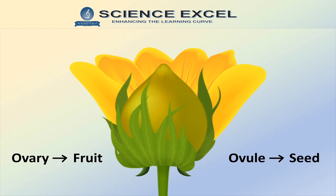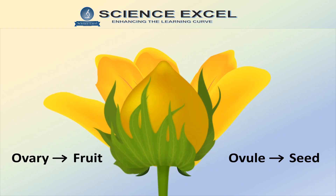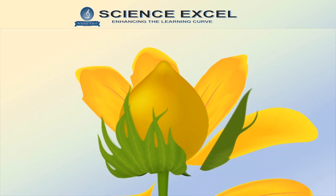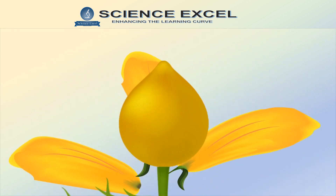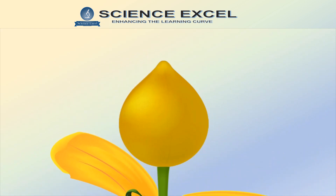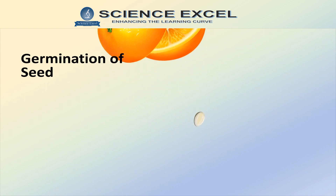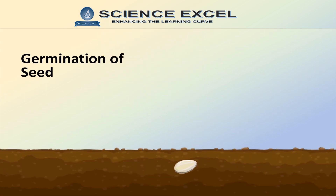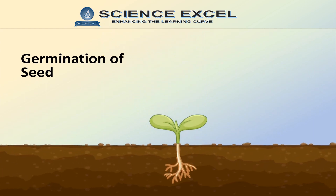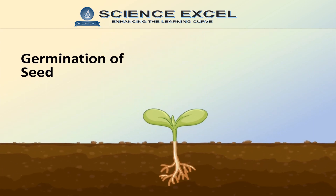The ovary ripens and forms a fruit around the seed. Many parts of the flower like the sepals, petals, and stamens have all done their job, hence they wither and fall off. Seeds fall upon the ground when fruits burst open and they germinate in the soil under favorable conditions.